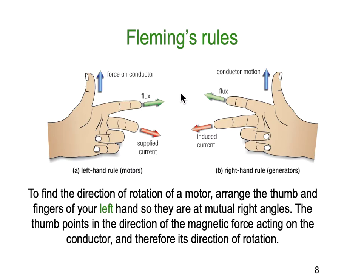We use the left-hand rule for motors and the right-hand rule for generators. The thumb represents the force on the conductor, the index finger represents the flux, and the middle finger represents the supplied current in the conductor. To find the direction of rotation of a motor using Fleming's left-hand rule, arrange the thumb and fingers at mutual right angles — the thumb points in the direction of the magnetic force acting on the conductor and therefore the direction of rotation.